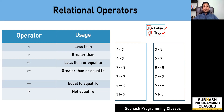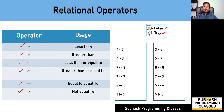There are six relational operators in C language. They are: less than, greater than, less than or equal to, greater than or equal to, equal to equal to, and not equal to. Before learning how these operators work, it is important that you must know how to read expressions that involve relational operators.